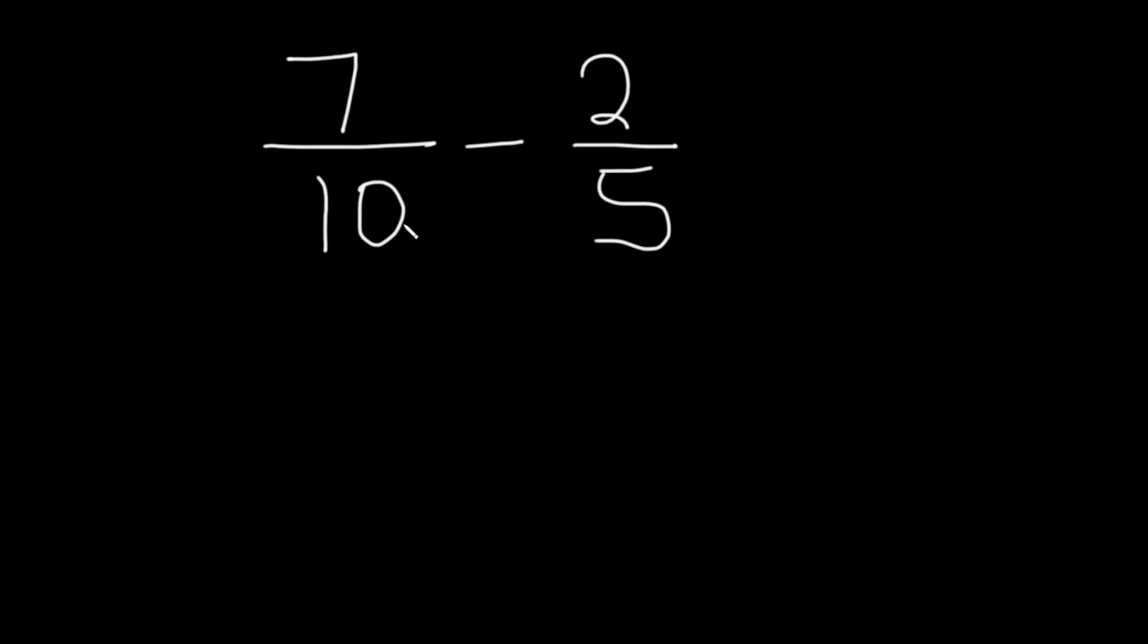So in order to subtract fractions, the number on the bottom, which is called the denominator, needs to be the same in both fractions. So here it's a 10, and over here in this one it's a 5.